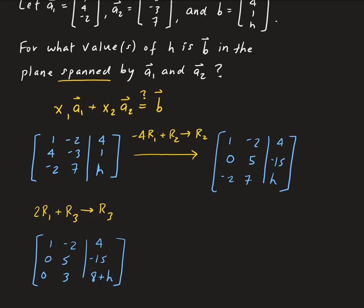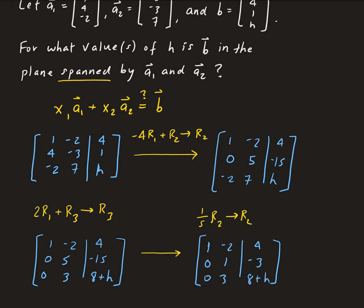In the second row, we can see that both values are divisible by 5, so we divide everything in row 2 by 5 — that is, one-fifth times row 2, stored in row 2. This gives us row 1: 1, negative 2, 4; row 2: 0, 1, negative 3; row 3: 0, 3, 8 plus h. We can now use the 1 in the second row, second column as a pivot.